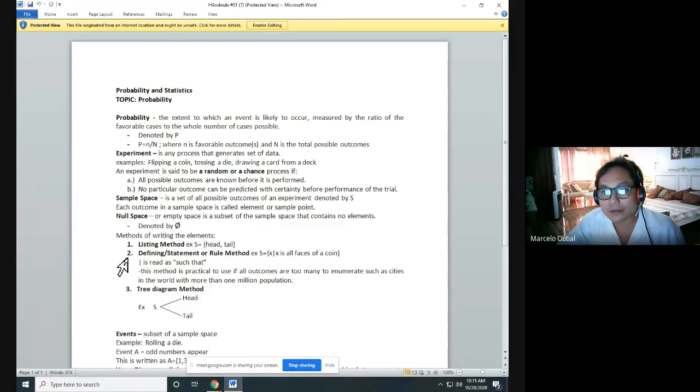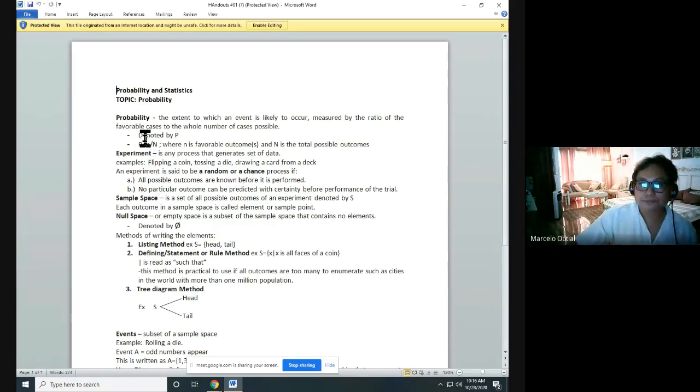And follow some methods of writing the elements. We have actually three: the listing method, defining or statement or rule, and tree diagram. Okay, first term, probability.